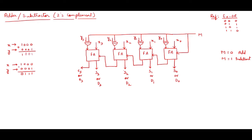The circuit you are observing on the screen is similar to a parallel adder. I have taken a 4-bit circuit here. This 4-bit circuit will act as an adder as well as a subtractor depending upon the m bit. m is the control bit: when m equals 0, the circuit behaves as an adder; when m equals 1, it behaves as a subtractor.